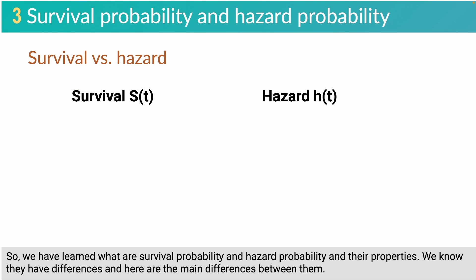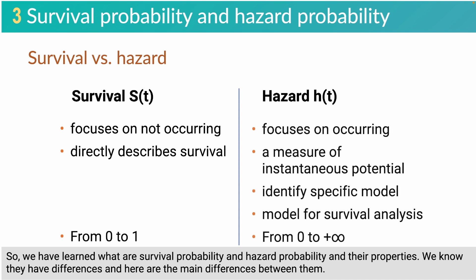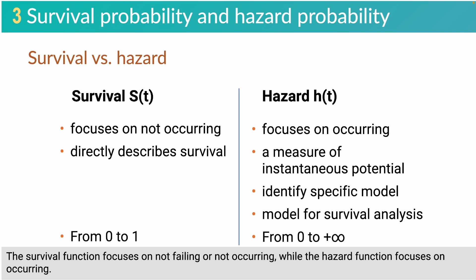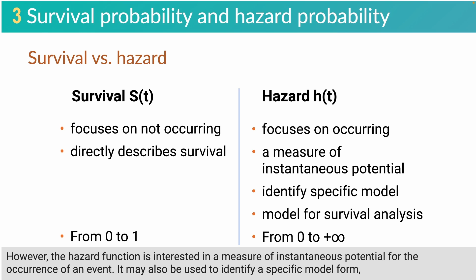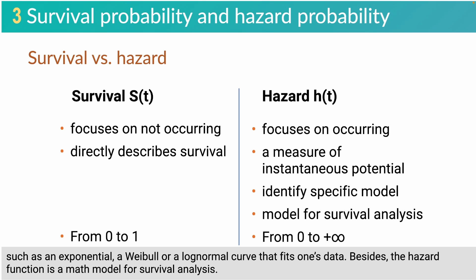We have learned about survival probability and hazard probability and their properties. Here are the main differences between them. The survival function focuses on not failing or not occurring, while the hazard function focuses on occurring. Regarding data analysis, the survival function is more naturally appealing for the analysis of survival data because it directly describes the survival experience of a study cohort. However, the hazard function measures instantaneous potential for occurrence of an event. It may also be used to identify specific model forms — such as exponential, Weibull, or log-normal curves — that fit one's data. Besides, the hazard function is a mathematical model for survival analysis.